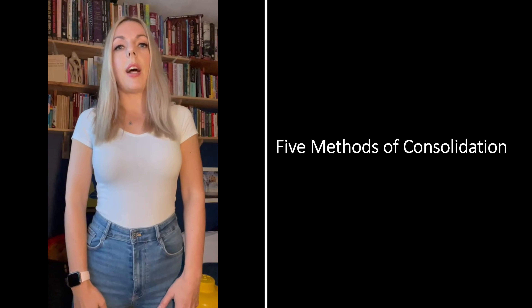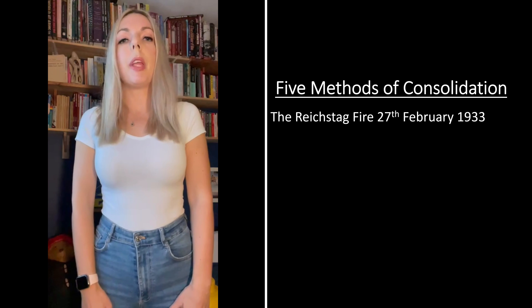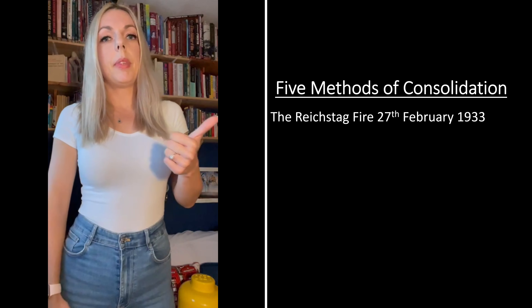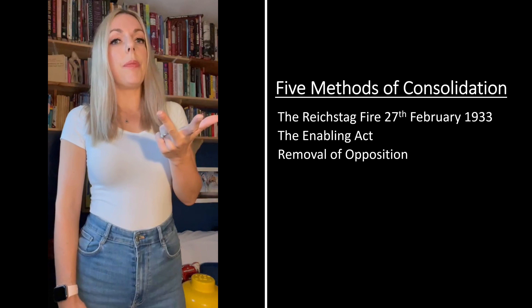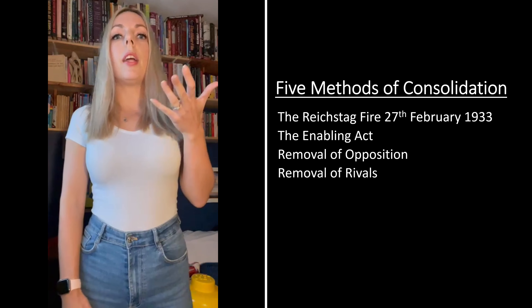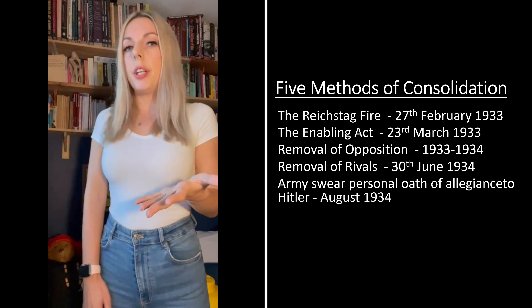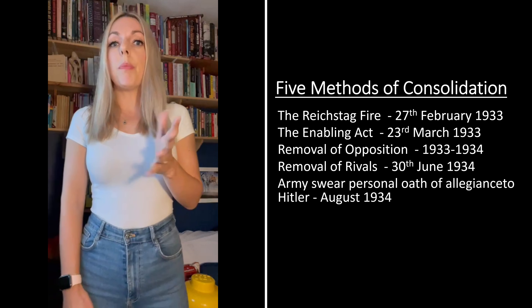There are five methods by which Hitler consolidated his power: the Reichstag fire, the Enabling Act, the removal of opposition, the removal of his rivals, and lastly the oath of allegiance that he got the army to swear to him. Once he completed all five of those, he is the Führer and everyone has to do exactly what he says.